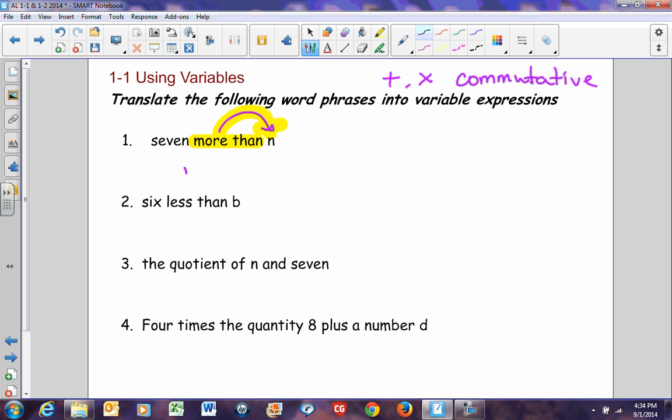So in this particular case, we should have n plus seven. We could have seven plus n because it is commutative. But if you learn to write it in the proper way when you're adding, then when we get to a problem like number two, you will have no problem doing it in the proper order when you're subtracting.